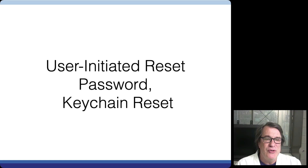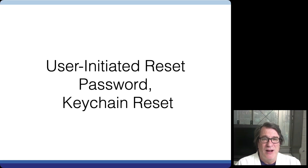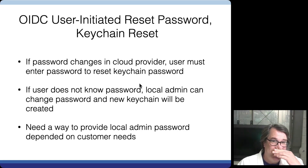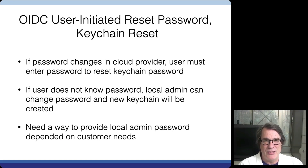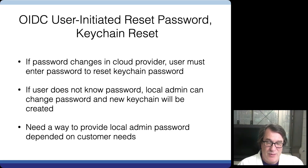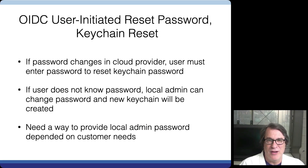One of the big reasons we built preferences override was for user-initiated reset password and keychain reset. When a user forgets their local password, having an admin intervene to change it increases help desk tickets and user frustration. The issue is: a user signs into their cloud password at the login window, but they may have changed their password in a web browser on another machine. Now the passwords are out of sync, and there's no way to know the local password to unlock the keychain. In the user session the keychain is already unlocked and we can update it, but at the login window we can't. So the user is prompted, and if they've forgotten their local password, they currently have to find an admin.